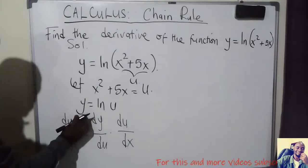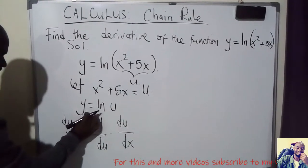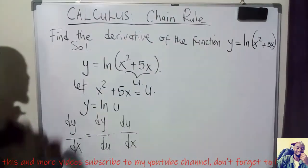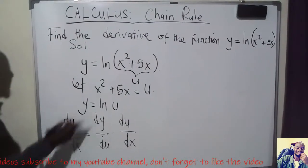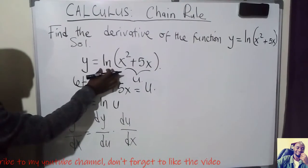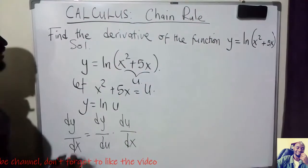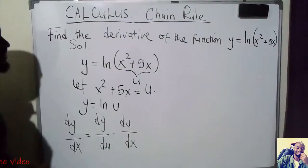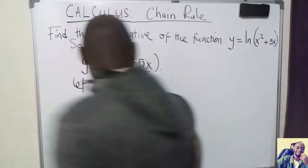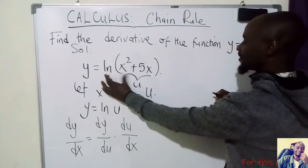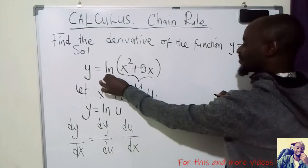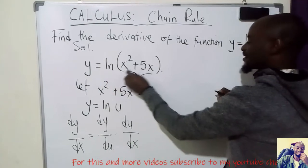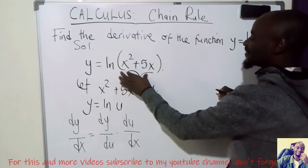The meaning of the Chain Rule here is: we are going to differentiate y = ln(u) with respect to u, then differentiate u with respect to x, then multiply the two results. In other words, we differentiate ln of the function, then multiply by the derivative of the same function inside.